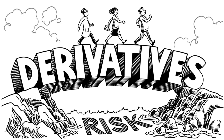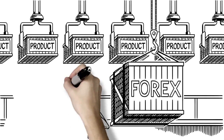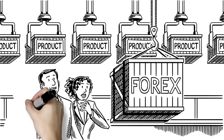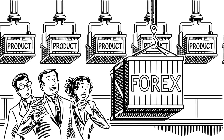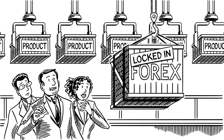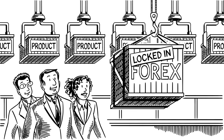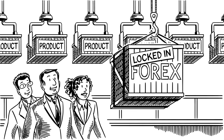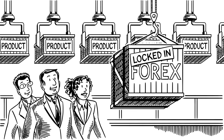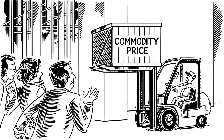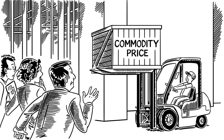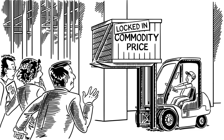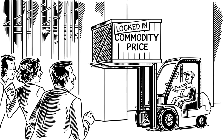Instravita might use foreign exchange derivatives when it exports its product overseas, so a sudden shift in currency rates won't affect its revenue. It could use derivatives to lock in the price of the raw materials it purchases, so its costs aren't as prone to price fluctuations.